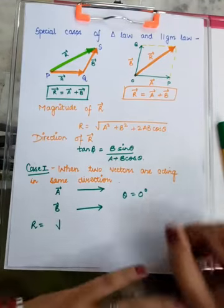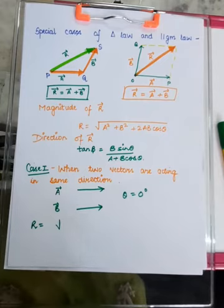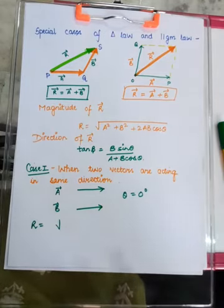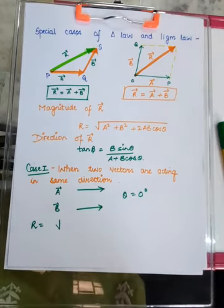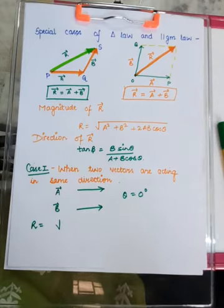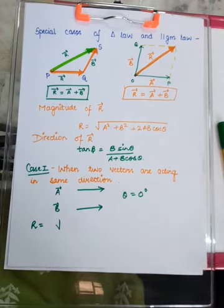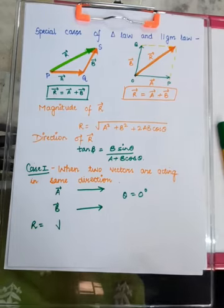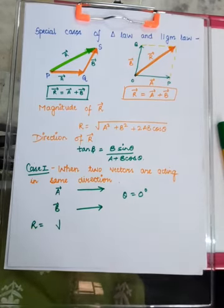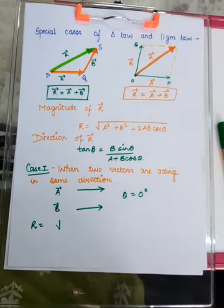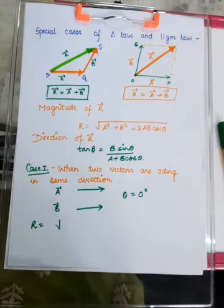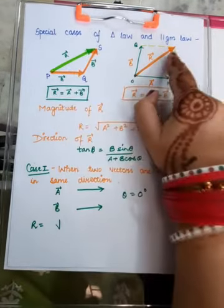Good morning dear students. In the last video lecture on vectors, I discussed vector addition and that vector addition is not possible by simple laws of algebra. For vectors you cannot do 10 plus 7 equals 17, because it could be 10 minus 7 equals 3 also. You need to know the directions. I taught about triangle law of vector addition, parallelogram law of vector addition, and today I am going to discuss the special cases of both laws.